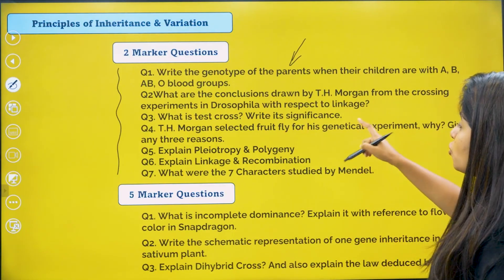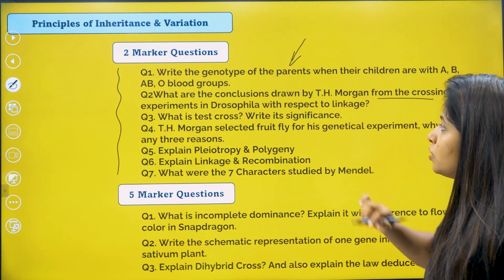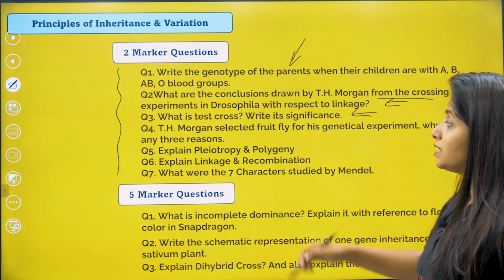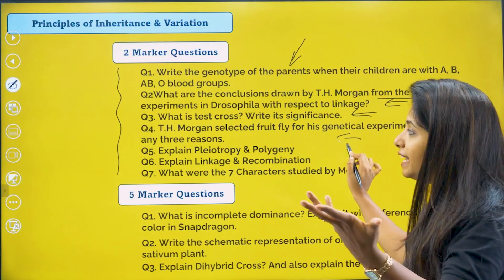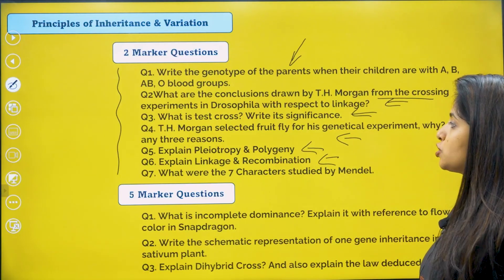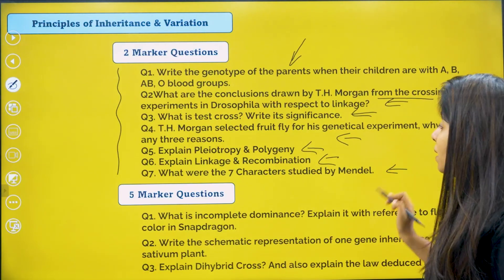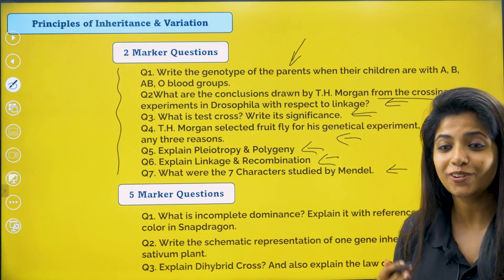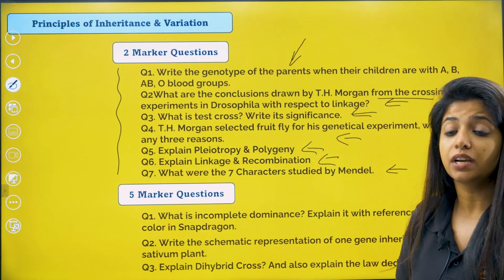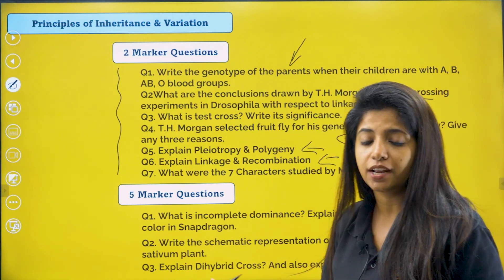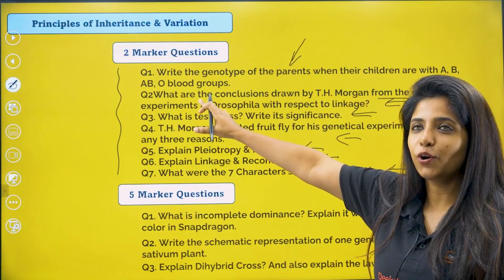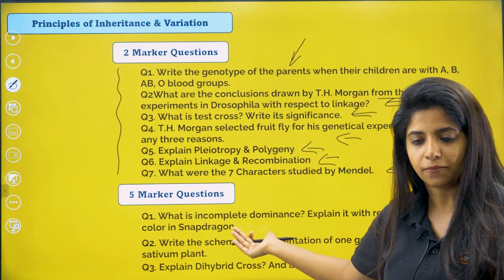What are the conclusions drawn by T.H. Morgan from crossing experiments in Drosophila? You should know that. What is a test cross? T.H. Morgan selected fruit flies for these experiments — why? Explain pleiotropy and polygeny. Explain linkage and recombination. What are the seven characteristics studied by Mendel? Who gave gene mapping? It was Alfred Sturtevant who gave the gene mapping method. He was a student of T.H. Morgan.